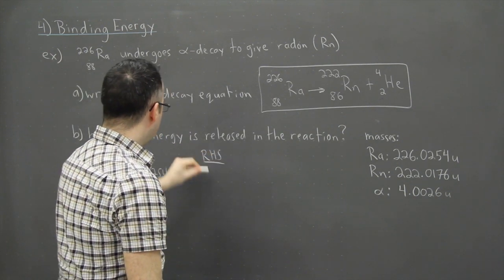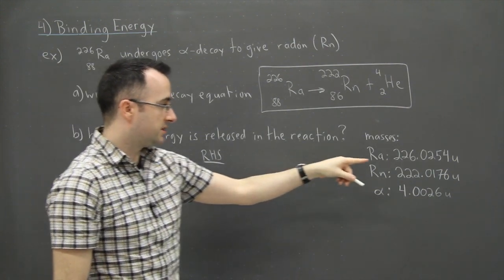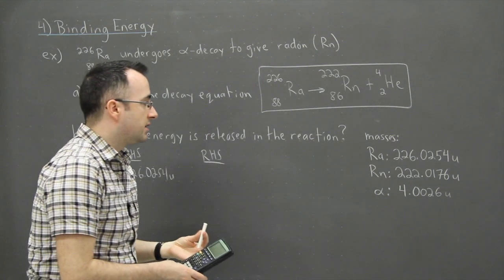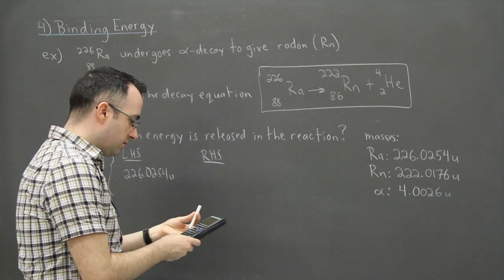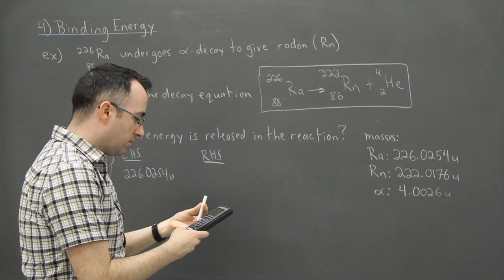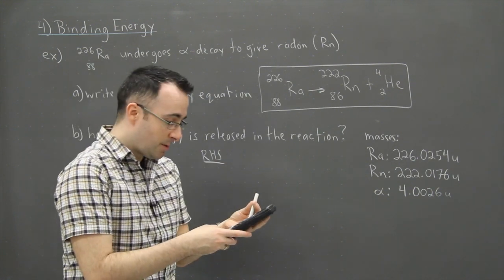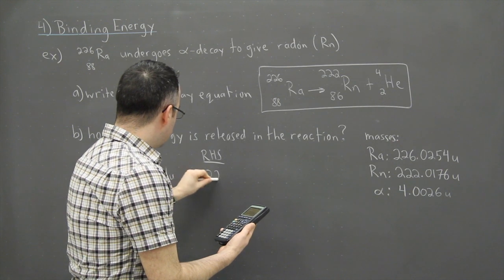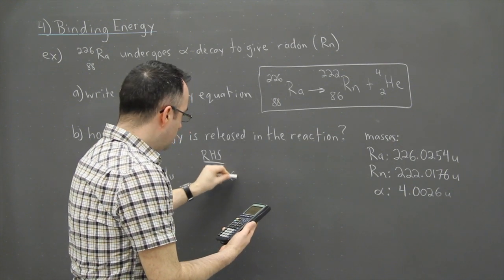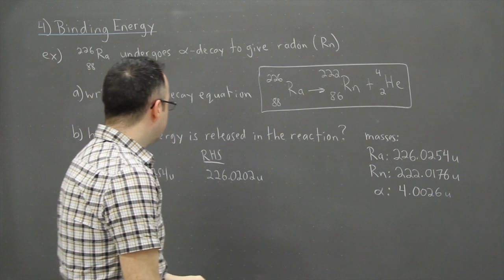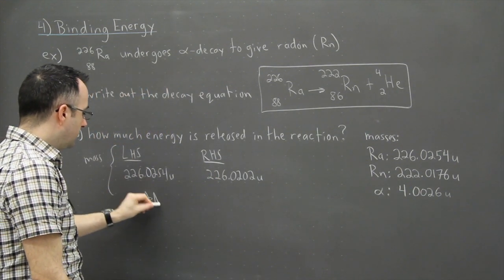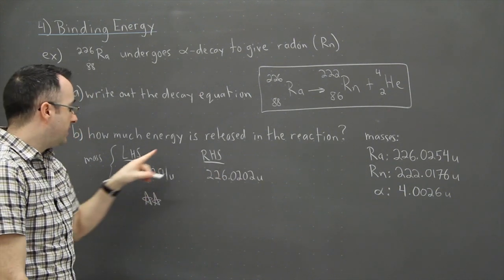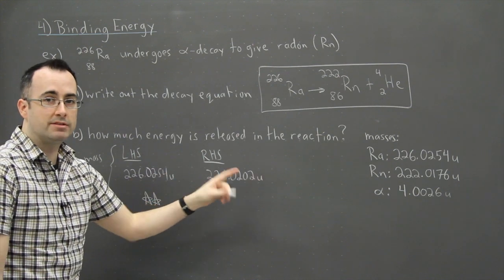The right-hand side mass however is going to be 222.0176 plus this mass here, so I'm just going to do this right here on my calculator. So 222.0176 plus 4.0026, and I get an answer then of 226.0202U. From there then, this is the key thing. Do you notice this one right here is a little bit lighter than that one? You normally have to go to four decimal places to really see excitement happening here.